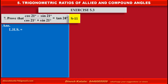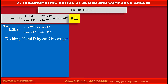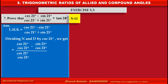Left hand side is equal to cos21 minus sin21 upon cos21 plus sin21. Dividing numerator and denominator by cos21, we get: the first term of the numerator becomes cos21 upon cos21, minus the second term becomes sin21 upon cos21. At the denominator, first term becomes cos21 upon cos21, plus second term becomes sin21 upon cos21.